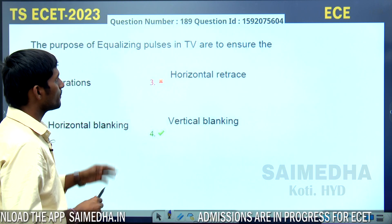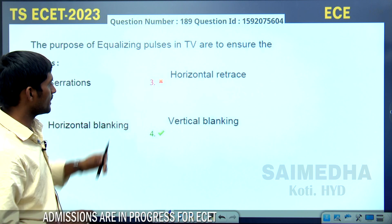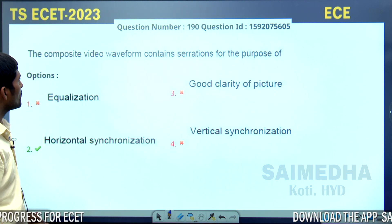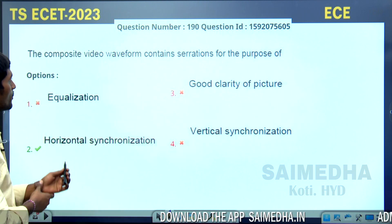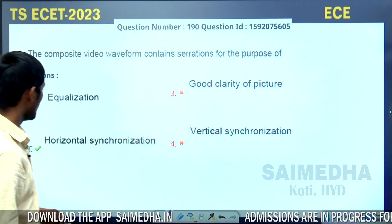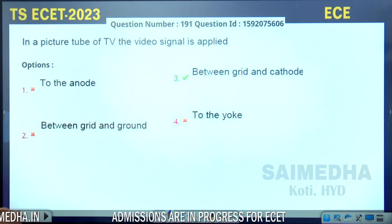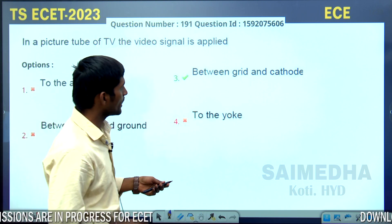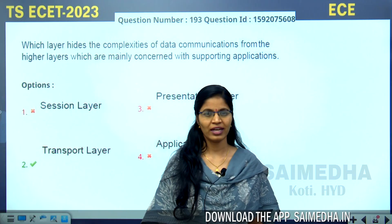The purpose of equalizing pulses in TV is to ensure vertical blanking synchronization. The composite video waveform contains equalization, and the second option is the correct answer. In the picture tube of a TV, the video signal is applied between the grid and the cathode, making the third option the correct answer.